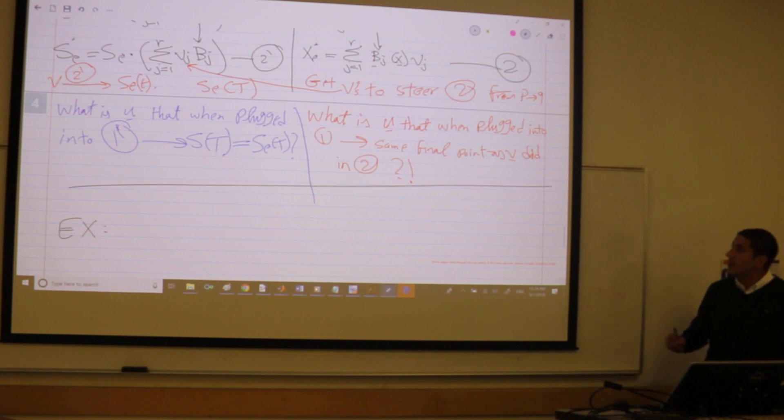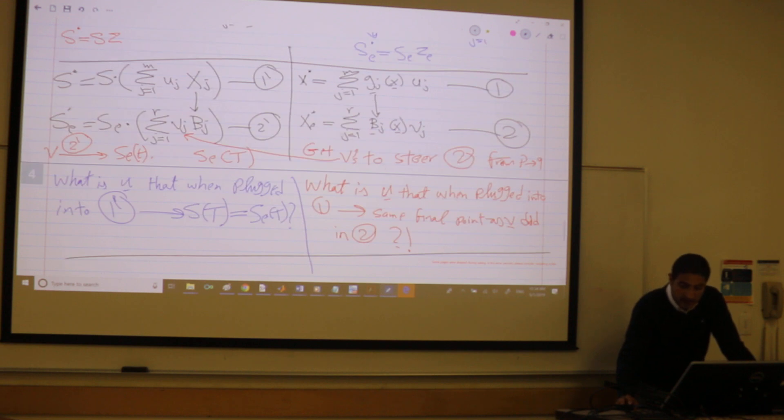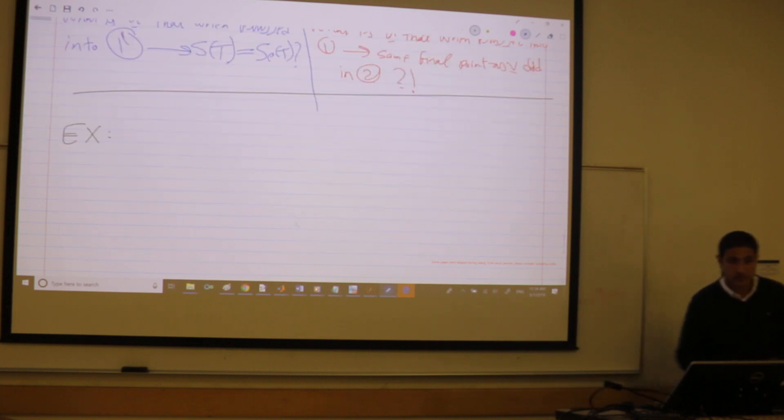So how many steps do we have? One, extended system. Two, go here and hit me the final point. Three, from the final point, hit me the U's from here. So one, I will do it in the extended system, and the last two steps, I will do it in this world. So let's go ahead and do it.